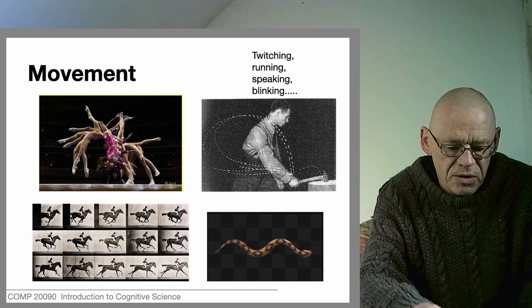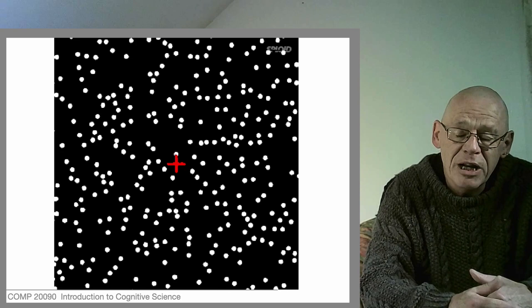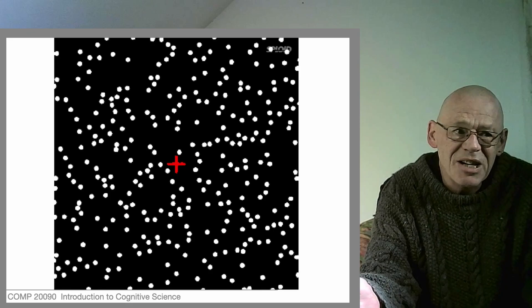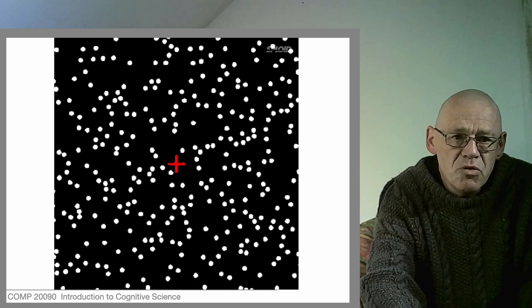Movement occurs all around us. So here's some movement. You can see a bunch of dots moving. This particular display was prepared to illustrate an illusion, but we're interested in the fact that that's just a load of movement. It doesn't really admit of any interpretation.